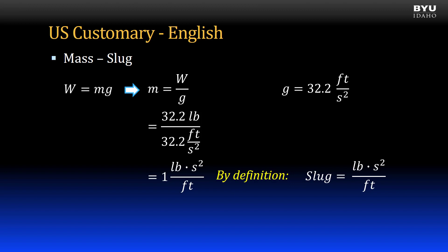So by substitution, the answer to the problem we just did is 1 slug. What does that mean? If I have an object that weighs 32.2 pounds on earth, it has a mass of 1 slug.